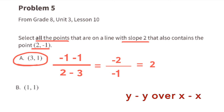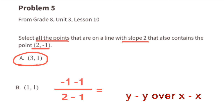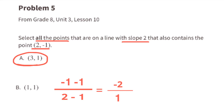Part B. Point (1, 1). Negative 1 minus 1 over 2 minus 1 equals negative 2 over 1, which equals negative 2. That is not a slope of 2 — it's a slope of negative 2, so point B is not on the line.